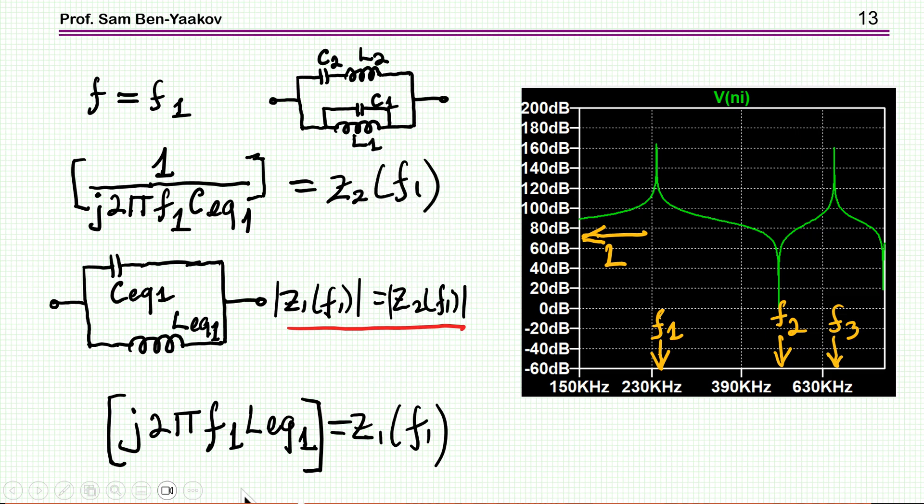So, if the inductance goes down, so there is some equivalent inductance, L equivalent, which is not L1 because of the capacitance effect. It is some value. Okay?